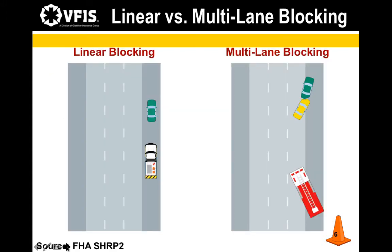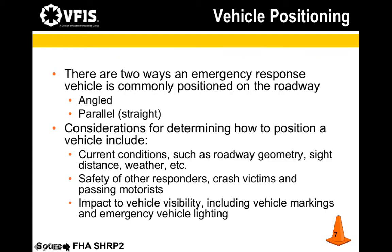This slide shows the difference between linear and multi-lane blocking. With linear blocking, we are blocking in a straight line in one lane. With multi-lane blocking, we are blocking a lane and a shoulder. This may be necessary when the incident occurred in part of a lane and vehicles cannot be moved.